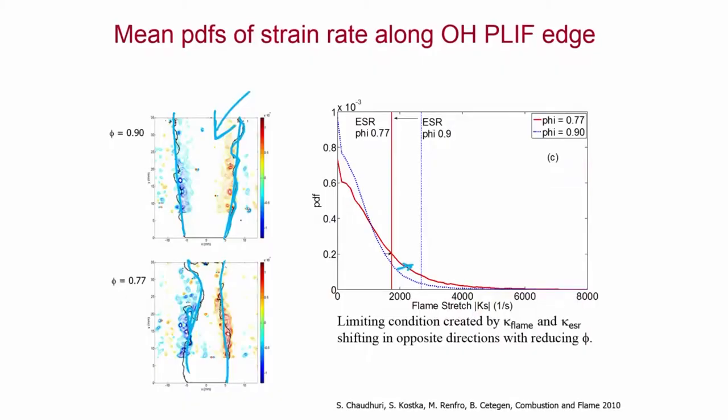As the equivalence ratio reduces and the flame speed drops, the flame transitions from a conical to a columnar shape. Instead of enveloping the Kelvin-Helmholtz vortices as before, the columnar flame now overlaps with the Kelvin-Helmholtz vortices. These vortices can impart strong strain on the flame surface, causing the PDF of stretch rate on the flame surface to shift to the right, while the extinction strain rate is also reducing.